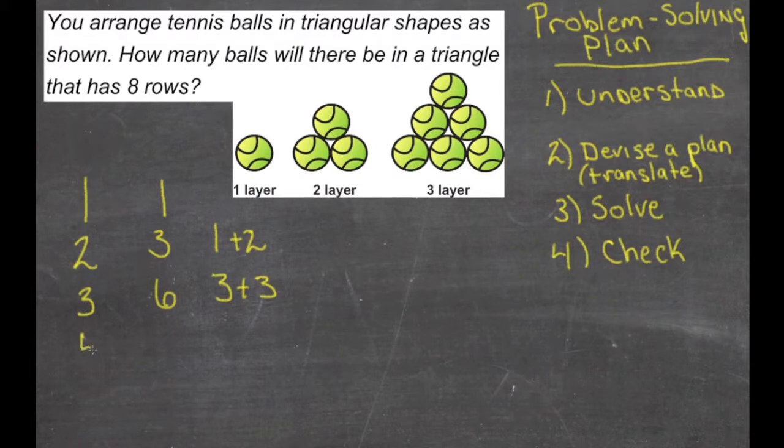So, if we were to go on to layer four, the fourth layer, we have the six balls from the previous layer, plus four more since we're in the fourth layer. It's going to give us ten in layer four.